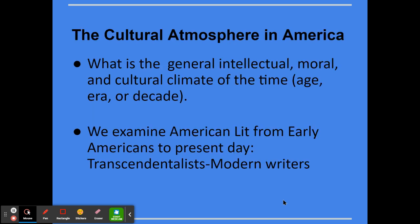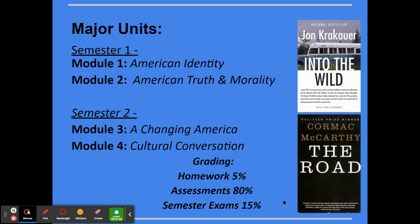A brief overview of the content of this course: the focus is the cultural atmosphere in America, so we're looking at texts through the lens of the general intellectual, moral, and cultural climate of the time period. We're examining American literature from early Americans to present day, which includes everything from transcendentalists to modern-day writers. We have four major units per semester. First semester, we look at identity as well as truth and morality — and when we're doing that, we read Into the Wild by John Krakauer as our transcendentalist text. Second semester, we look at a changing America and the cultural conversation within America, where we focus on Cormac McCarthy's The Road and our passion project — an awesome project where students really focus on something they're passionate about and share out with each other.